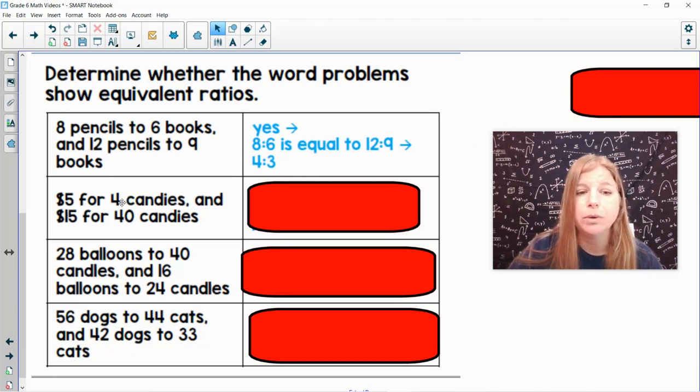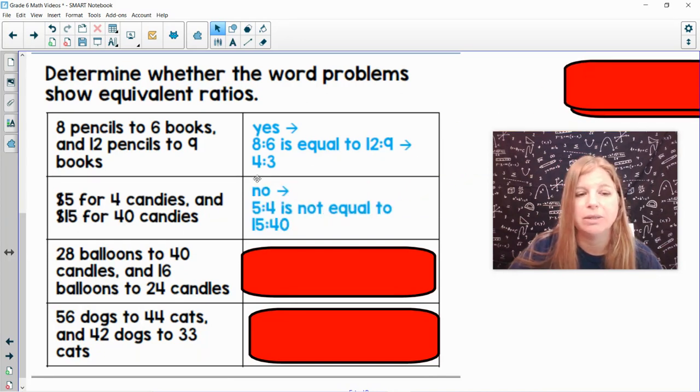$5 for 4 candies and $15 for 40 candies. 5 to 4, is that equal to 15 for 40? 5 times 3 is 15. But is 4 times 3, 40? No, it's not equal.